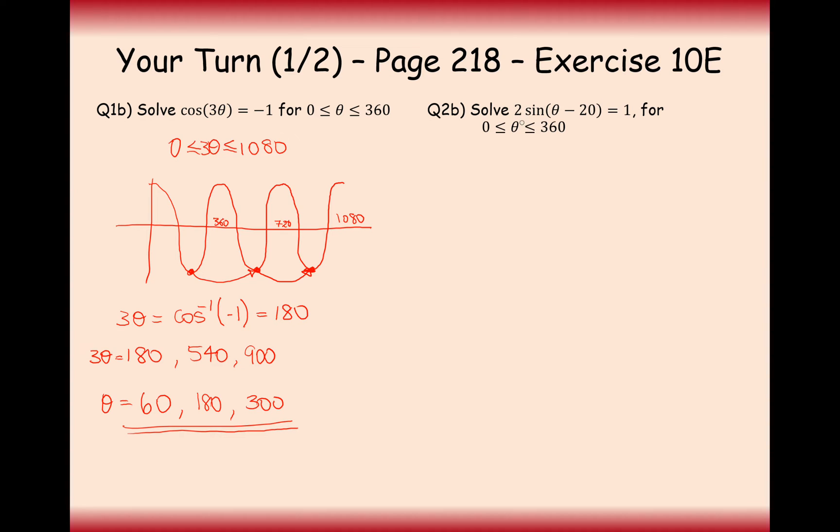Question 2b, we have a little 2 at the front of the sine here, so I'll just divide by that straight away. That's 2θ, not 20, equals 1 half. And now we're going to need to take away 20 from either side of our interval. So we've got from minus 20 to 340. Now let's draw the graph in between that region there, so it goes back a little bit, and it's going to be from 0 to 360.